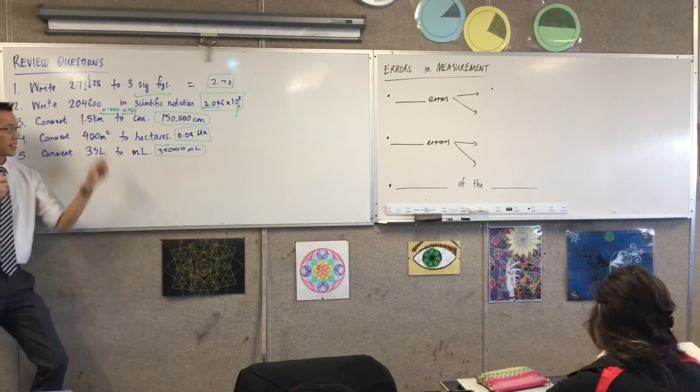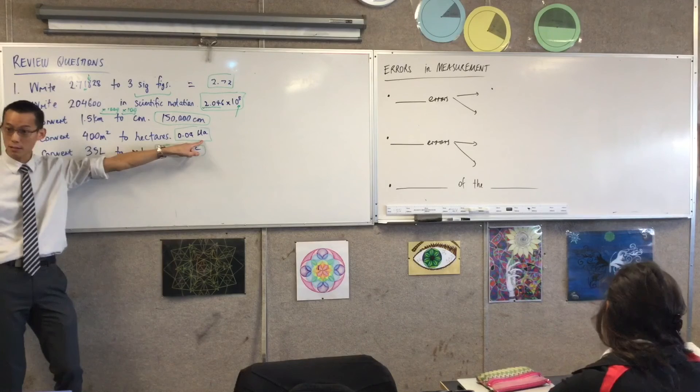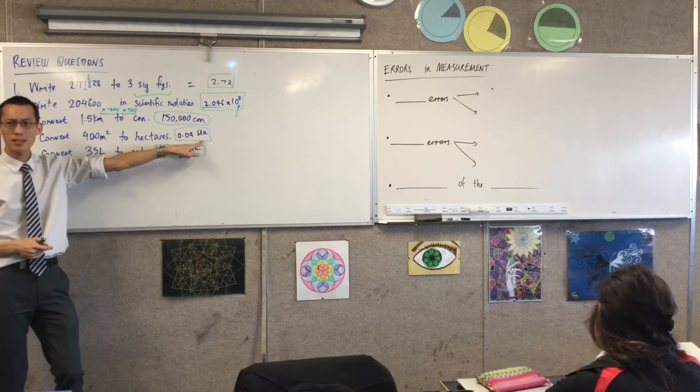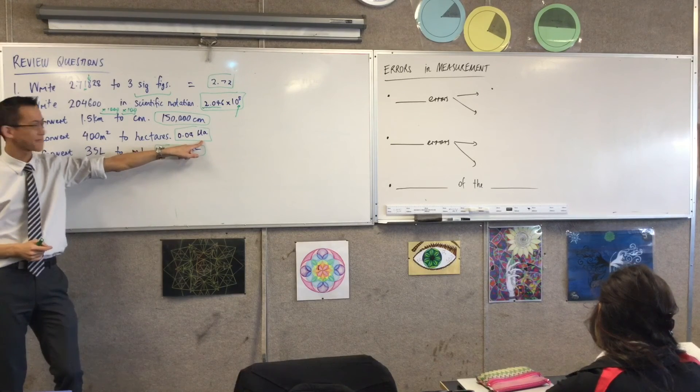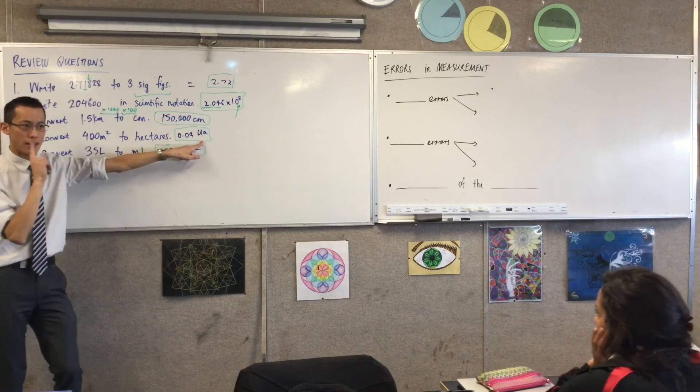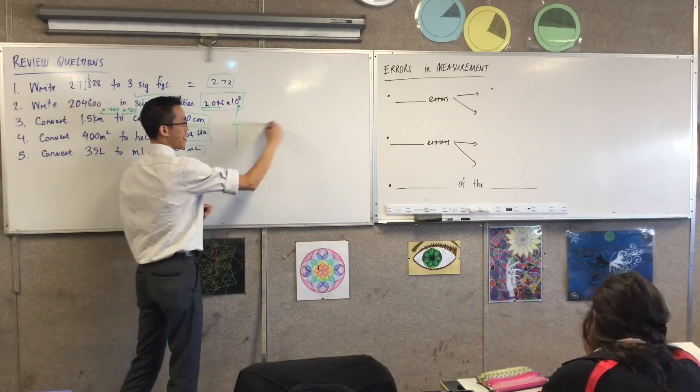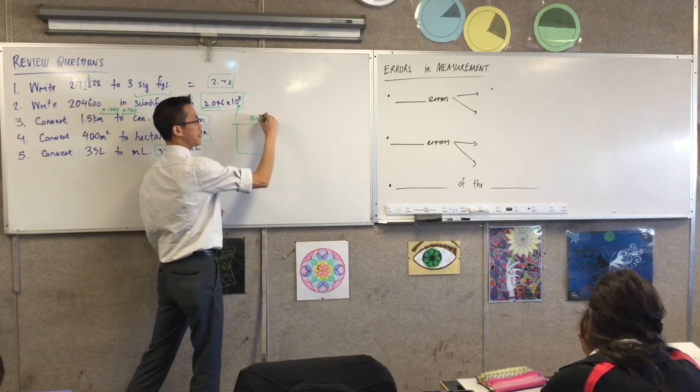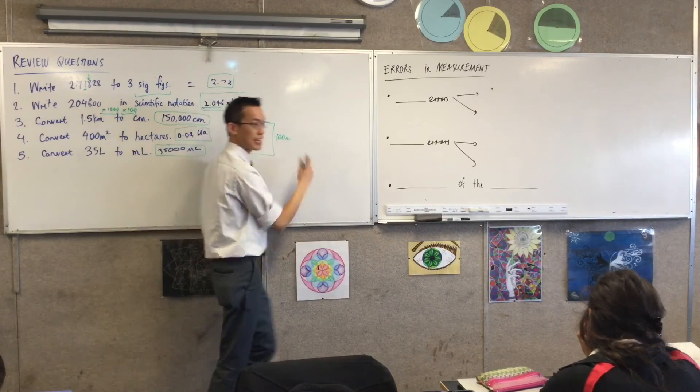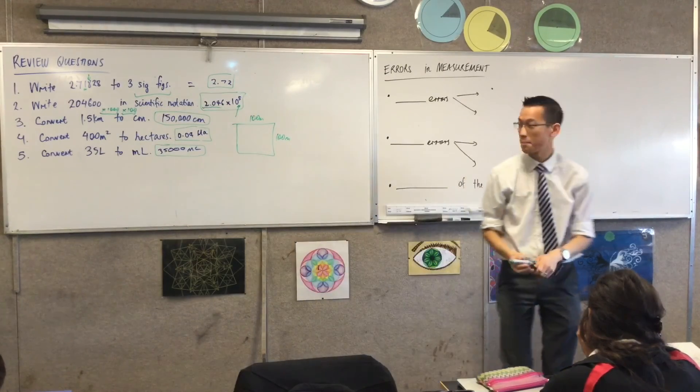When we're here, we are getting to really big meters. Hectares are big, right? So what did we divide by in this case? Ten thousand. It's ten thousand, right, because a hectare is a square that's one hundred meters by a hundred meters, and that gives you the ten thousand, which is what you divide it by.